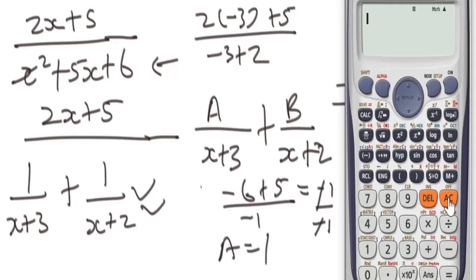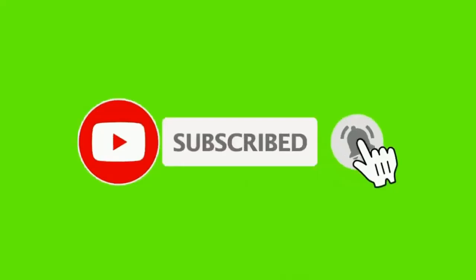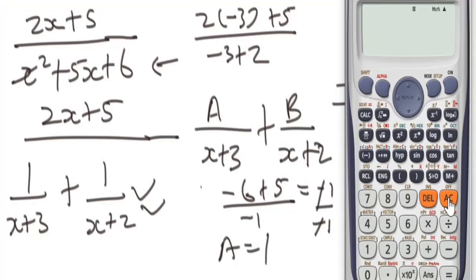This is basically how you can use shortcut tricks to solve problems involving partial fractions with linear factors in the denominator. My question for you is: which method will you be using more often — the shortcut trick or the calculator method? Give your response in the comment section below. If you're new to the channel, hit the subscribe button for more videos. Like, share, and comment, and feel free to ask any questions below. Thanks for watching.